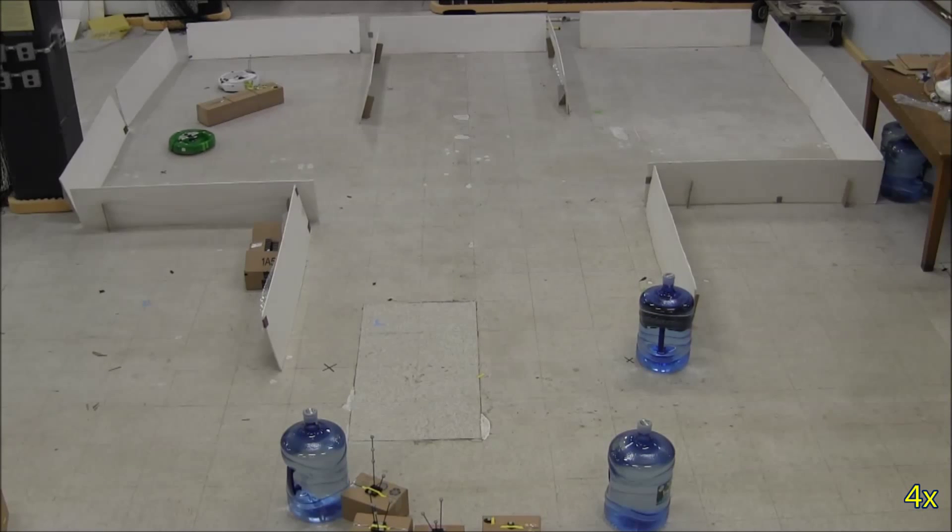The green robot sees the big box and the white robot, and it goes to the correct side of the box to help the white robot push the box to the goal.